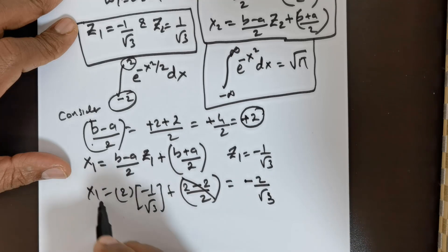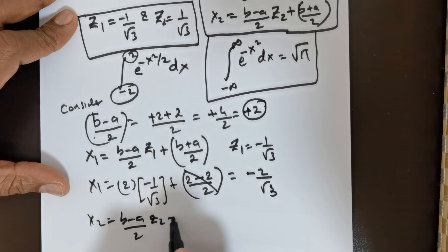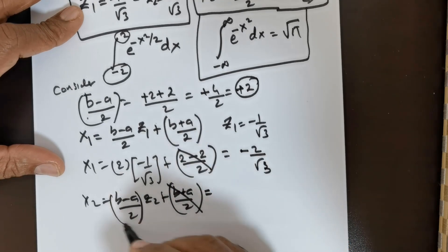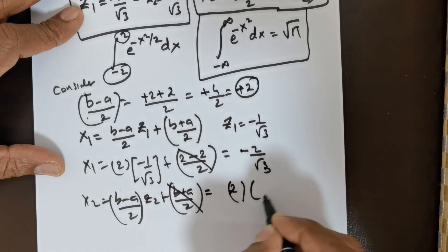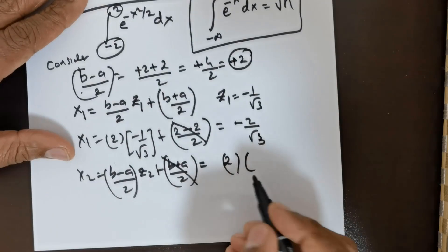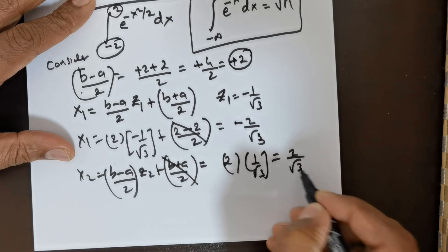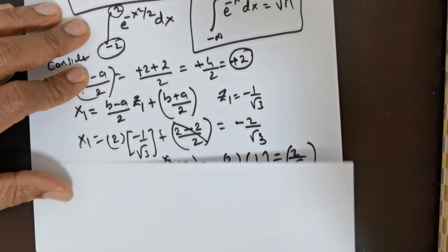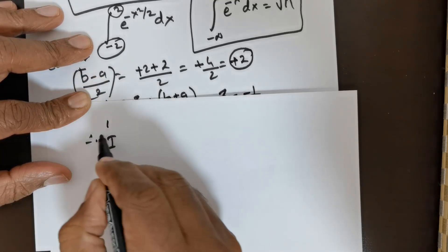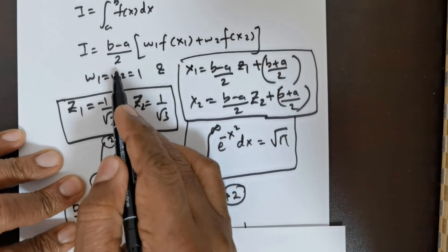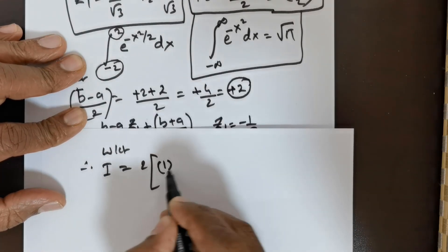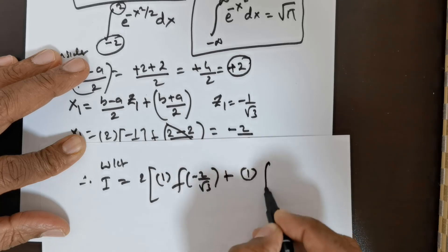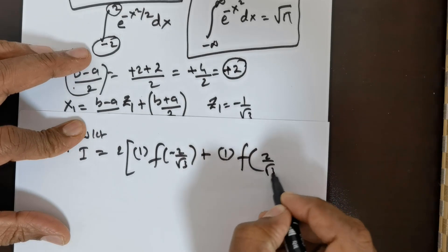Similarly, x2 = (b−a)/2 · z2 + (b+a)/2. The (b+a)/2 term vanishes again. So (b−a)/2 = 2, and z2 = 1/√3, giving x2 = 2/√3. Now, taking all of these values, let me go to a new sheet and substitute them into the function.